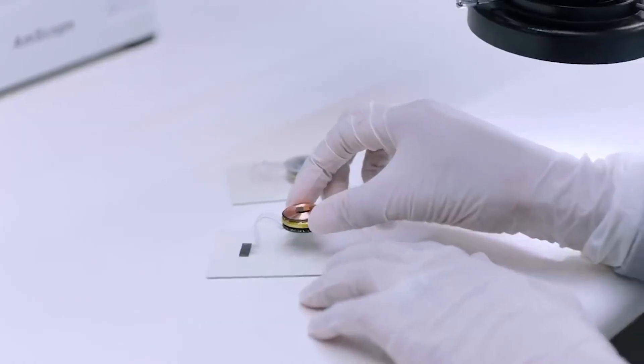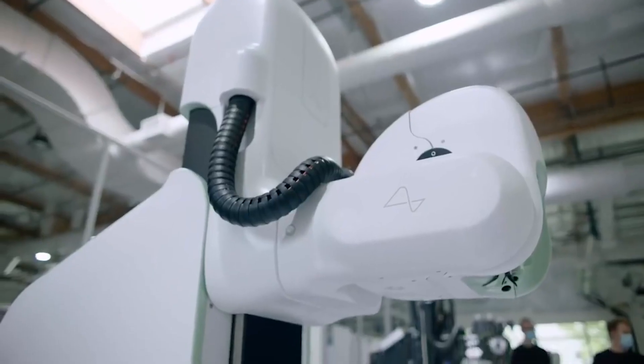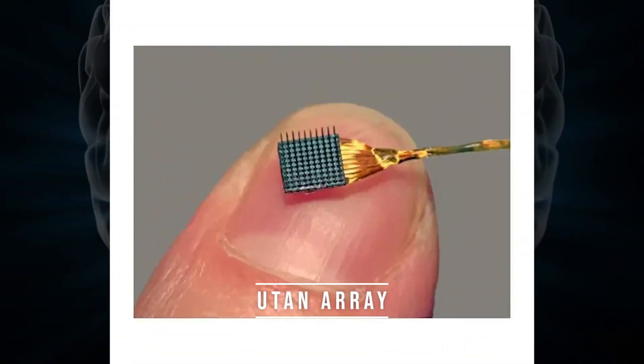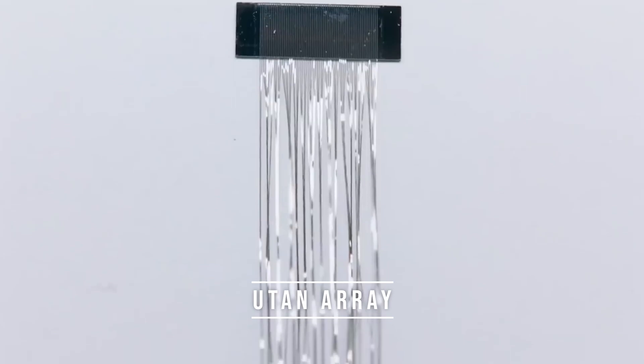Neuralink, however, seeks to bypass this hurdle by taking an invasive approach, installing electrodes directly into the brain in order to achieve an optimum connection. Currently, Utah Array is a major player in the field of invasive brain-machine interfaces.